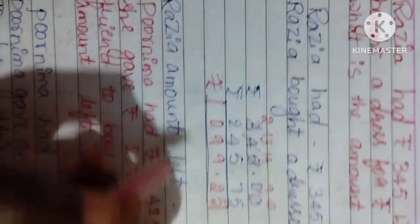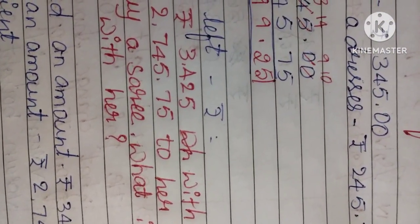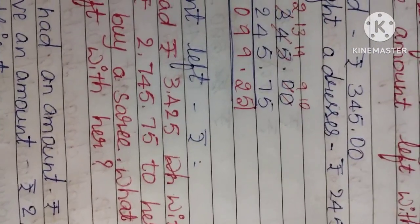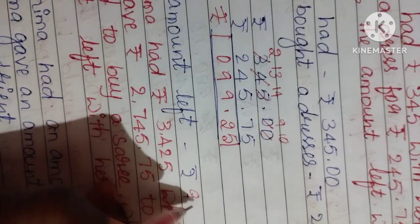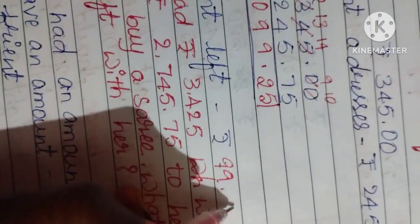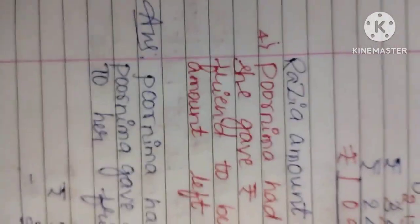So answer, how much she have now? 99 Rupees 25 paise. She have 99 Rupees 25 paise. You can write here also: Rupees 99.25.